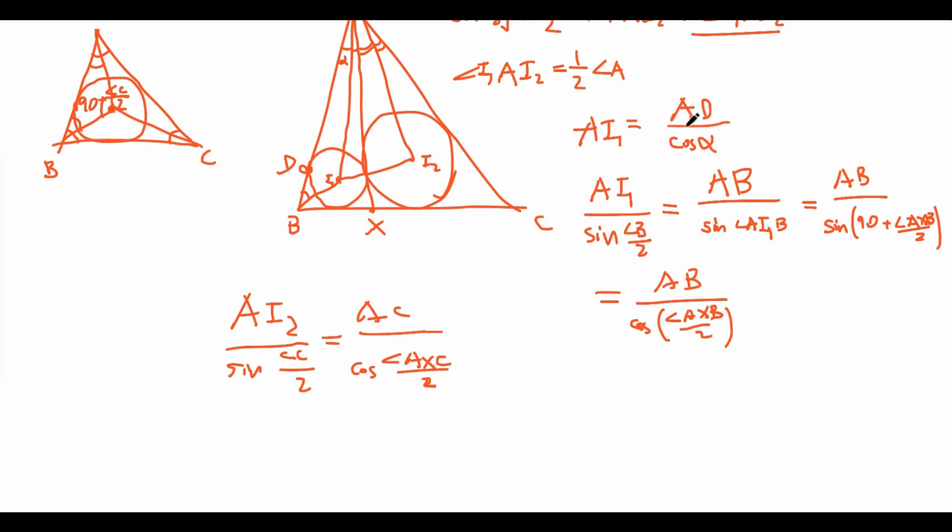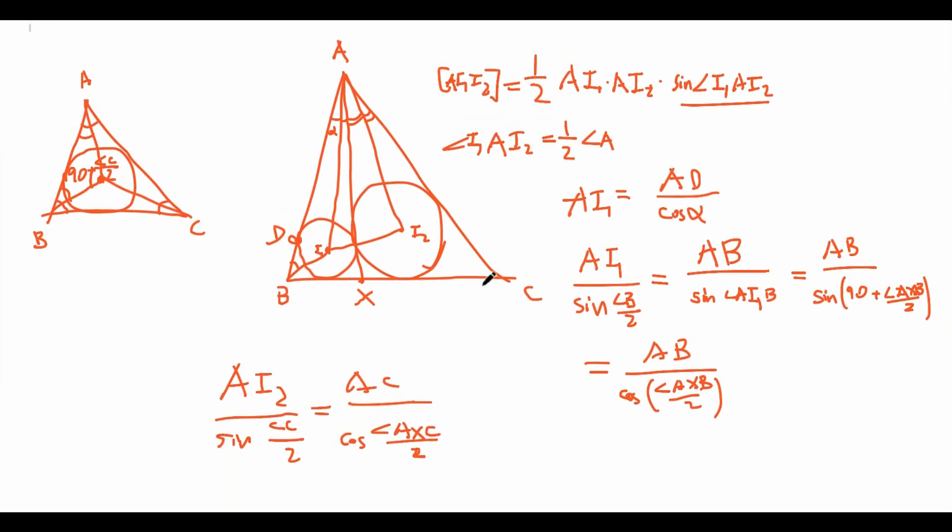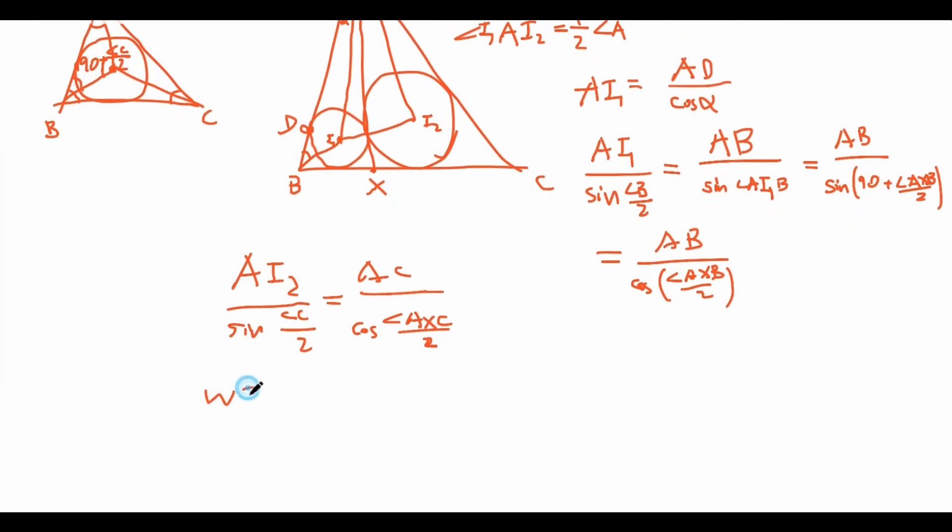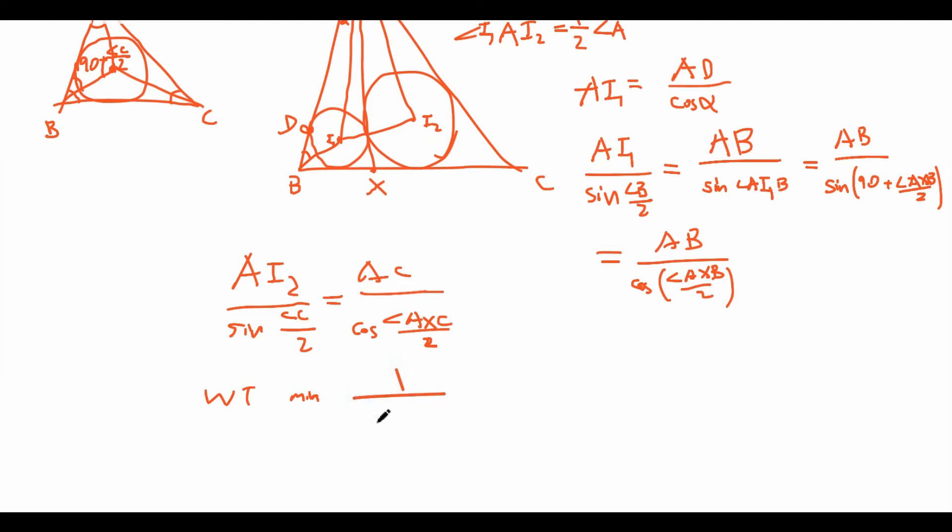So that means that AI1 is equal to sine of angle B over 2 times AB over cosine of angle AXB over 2. And AI2 is going to be equal to sine of angle C over 2 times AC over cosine of angle AXC over 2. And in particular, AB, AC sine of angle B over 2 are all constants. So, in order to maximize or minimize the product AI1, AI2, all we need to do is minimize 1 over cosine of angle AXB over 2 times cosine of angle AXC over 2.